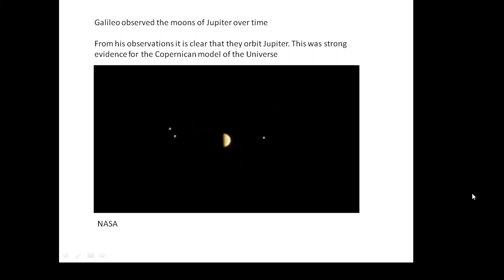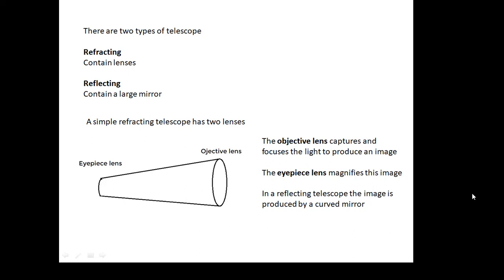Back to telescopes, though. Now, there's two types of telescope. There are refracting telescopes, which have got lenses in, and there are reflecting telescopes, which have got mirrors in. So, refracting and reflecting. And a simple refracting telescope has got two lenses. There's a big one and a little one. And the big one is called the objective lens. And the one that you look in, the little one, is the eyepiece lens. And the objective lens produces an image, and then the eyepiece lens magnifies that image.